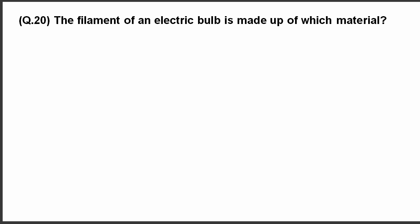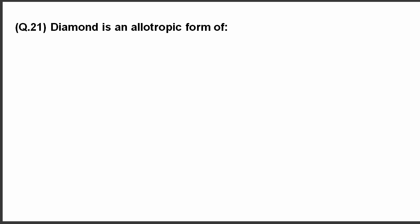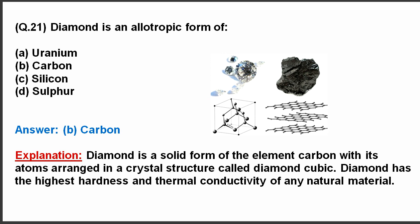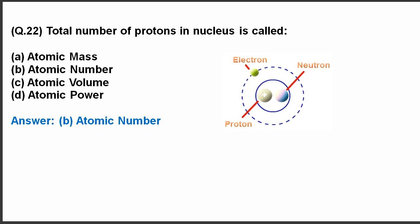Question number 20. The filament of an electric bulb is made up of which material? Here are the options. The correct answer is tungsten. Question number 21. Diamond is an allotropic form of? Here are the options. The correct answer is carbon. Question number 22. Total number of protons in nucleus is called? The correct answer is atomic number.